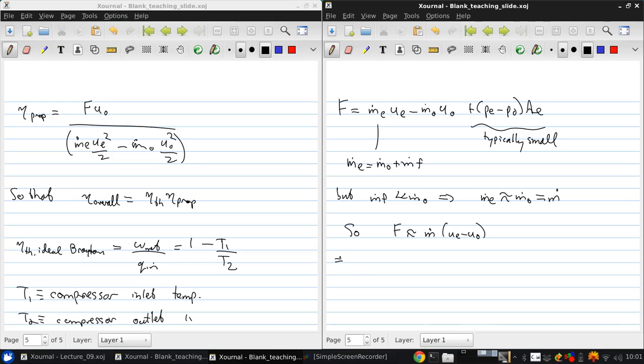we can simplify a great deal and say that f is approximately equal to m dot times ue minus u0. And if we apply this to the definitions of efficiency, then it simplifies quite a bit.